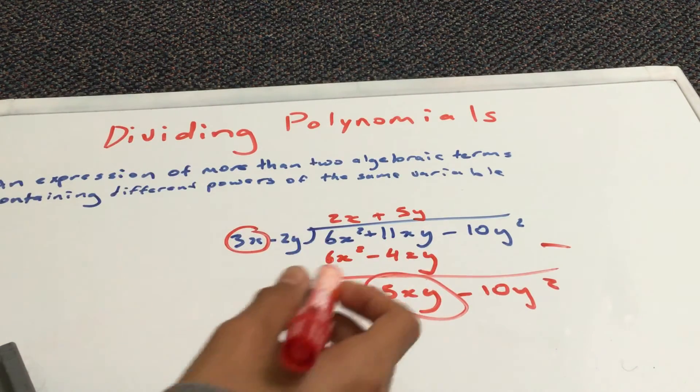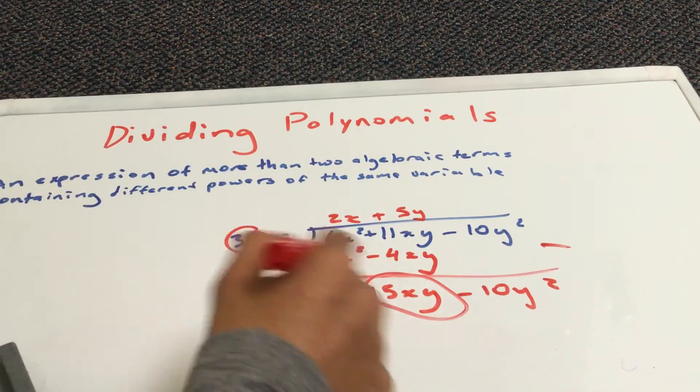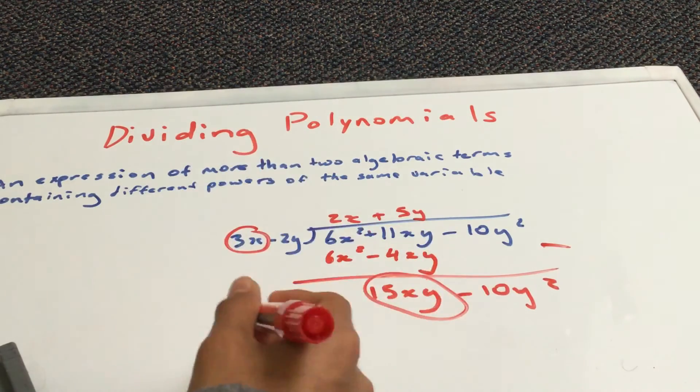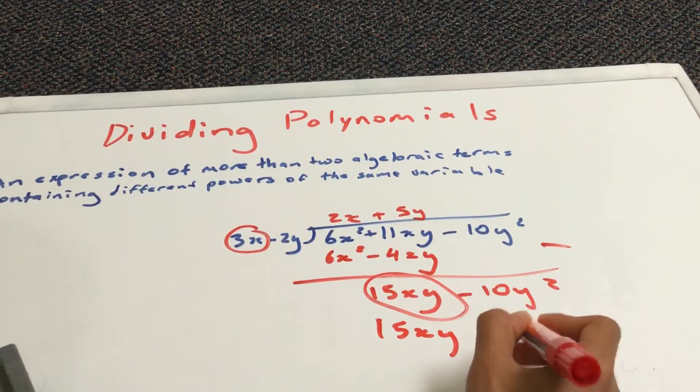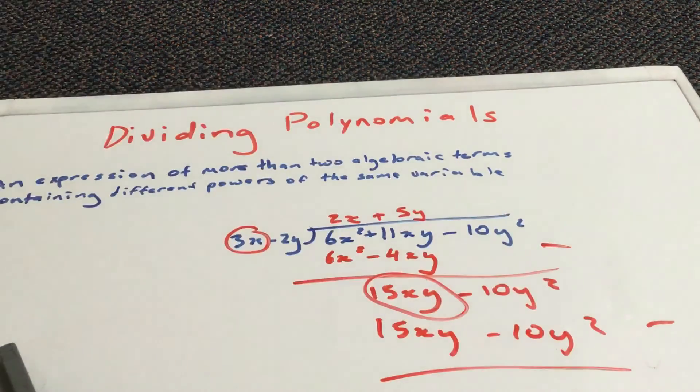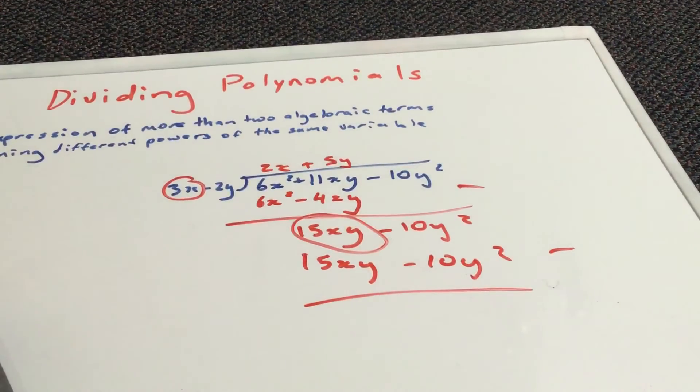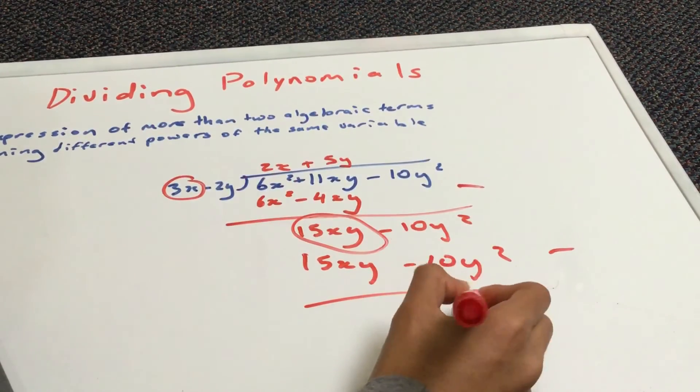So, now, this is what you do. You go 5y times this function here, this part. So, you get 15xy subtracted by 10y squared. Subtract. You should get 0.